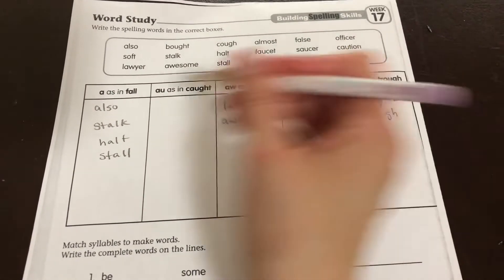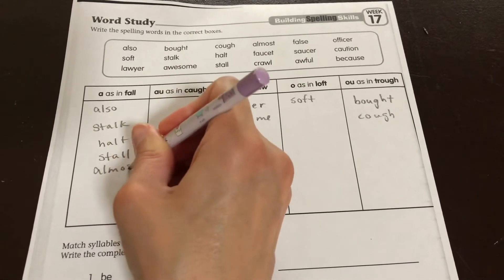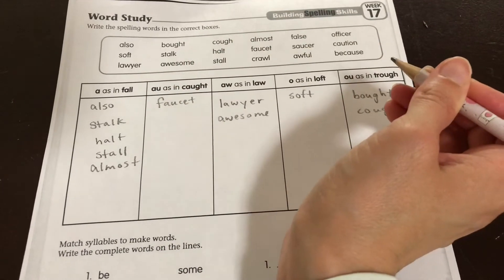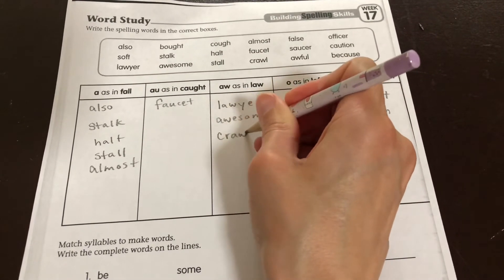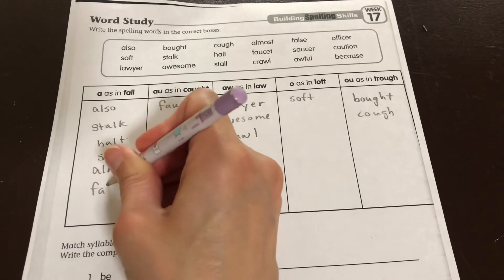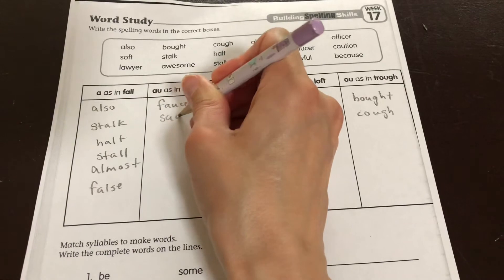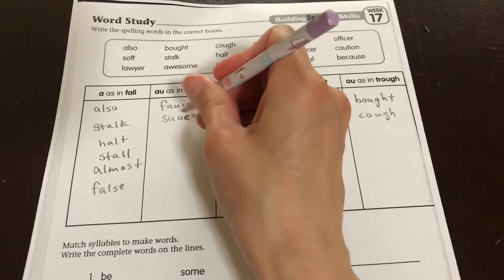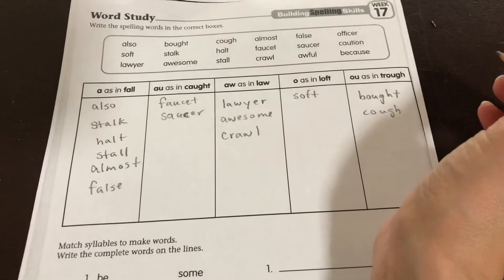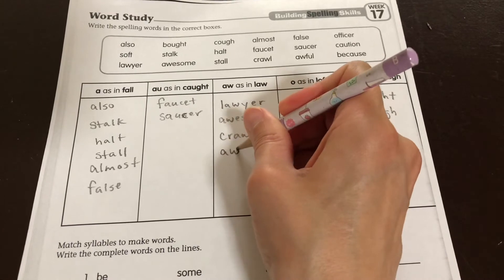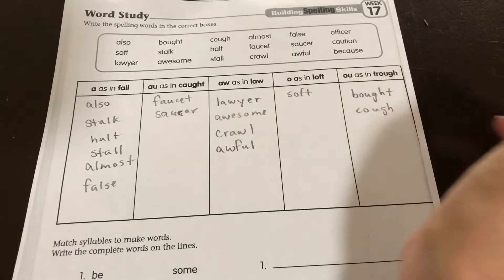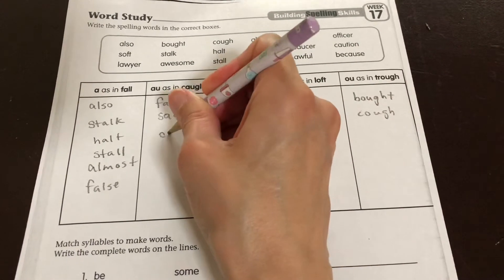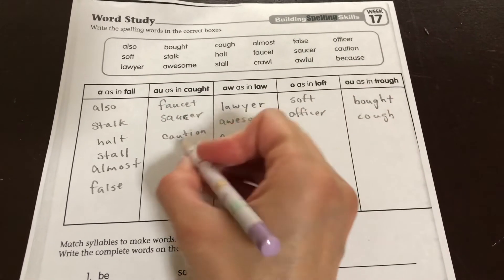almost, faucet, crawl, false, saucer, that's a C. And that should be an A. Awful. Officer. Caution. And because.